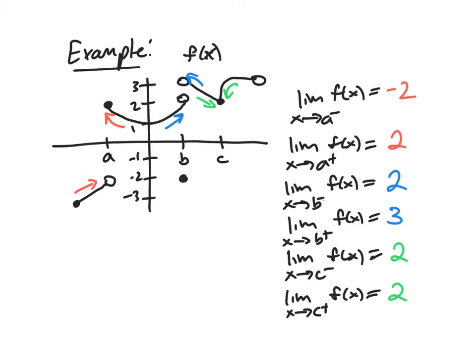So if you think back to our previous example, we now know what to look for for the two-sided limits existing. In this first case here, the limit as X approaches A, we see that the left-hand limit and the right-hand limit do not coincide. So in this case,